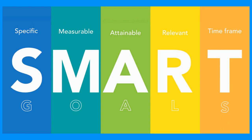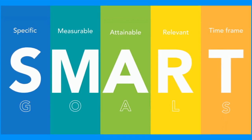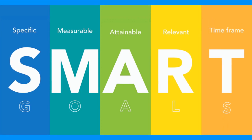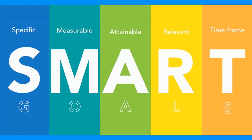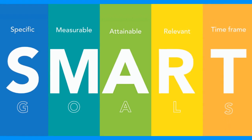They're measurable — you can see if you did them or you didn't. They're attainable — make things realistic, things you're actually going to do. Relevant — they tie in and connect to your goals. And you put a time frame, a due date or a start date, on them for your success.